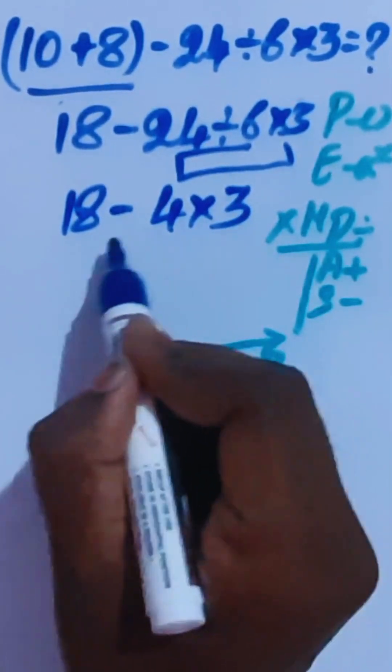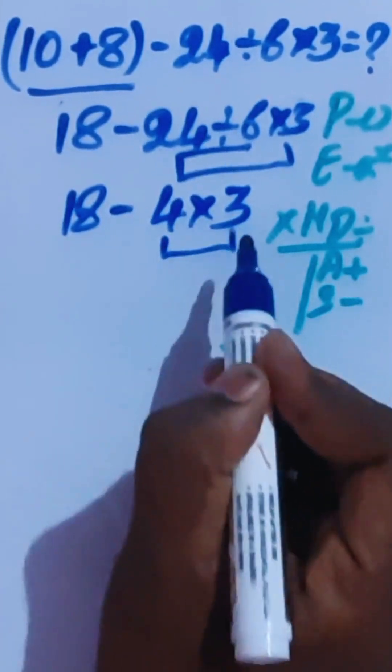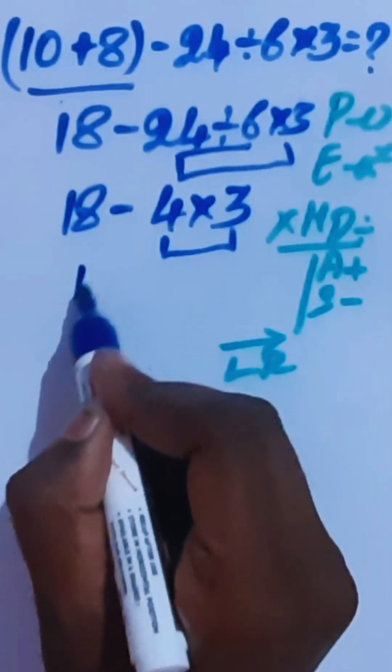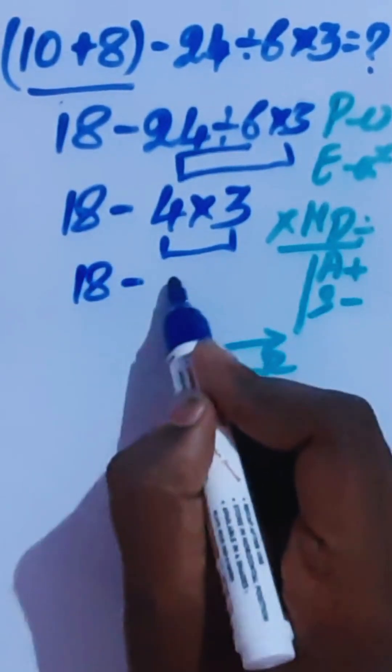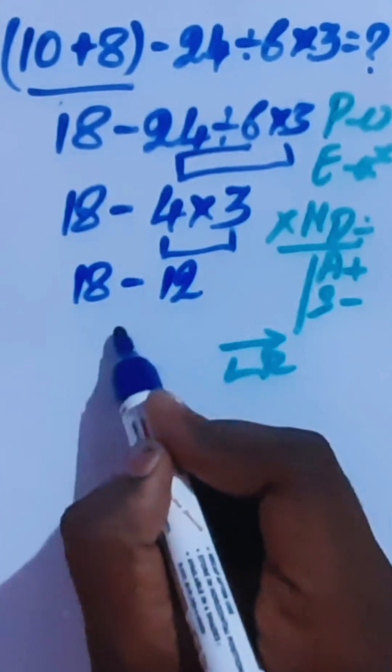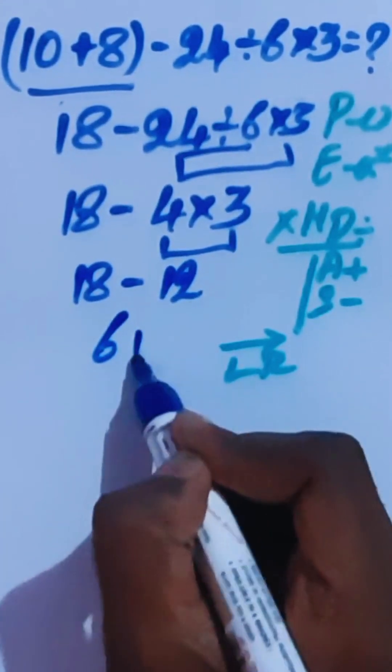Here we have subtraction and multiplication. Multiplication is again higher priority than this subtraction. So we have to do this. So 18 minus this is 12. Here we will get 18 minus 12 as 6 is the correct answer.